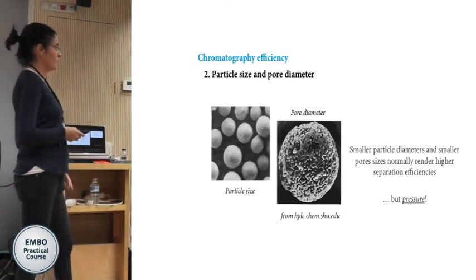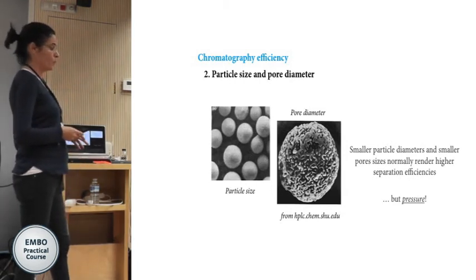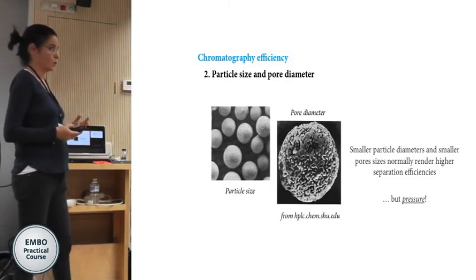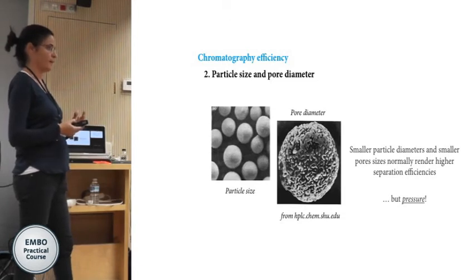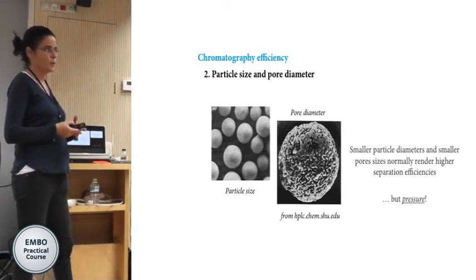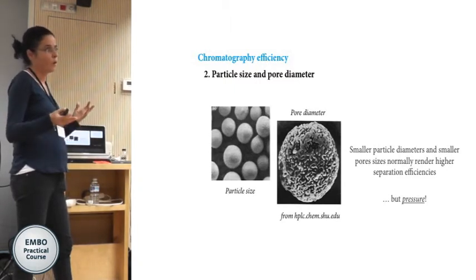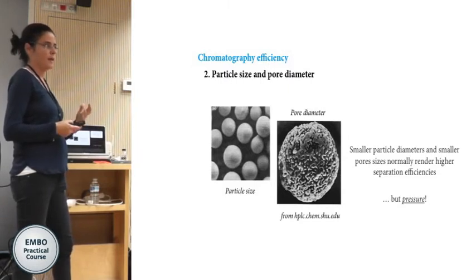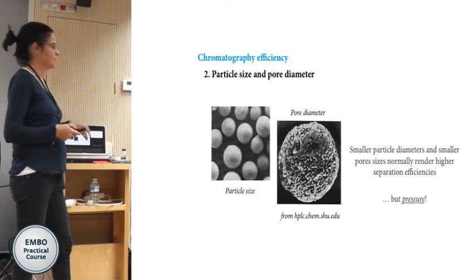Smaller particles and smaller pores give better resolution, but they generate very high back pressure. Depending on the LC system you have, you may not be able to use a very long column because the LC cannot deliver the mobile phase at that pressure.